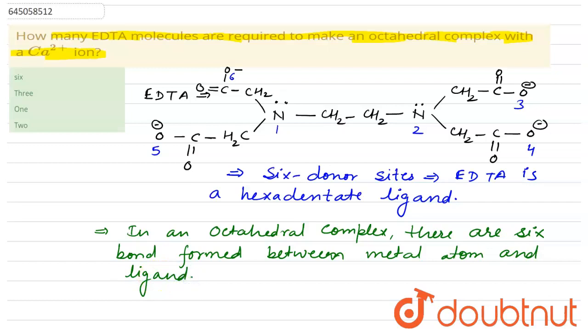One EDTA molecule can form six bonds because it is a hexadentate ligand. So only one EDTA molecule will be required to form an octahedral complex with Ca2+ ions.